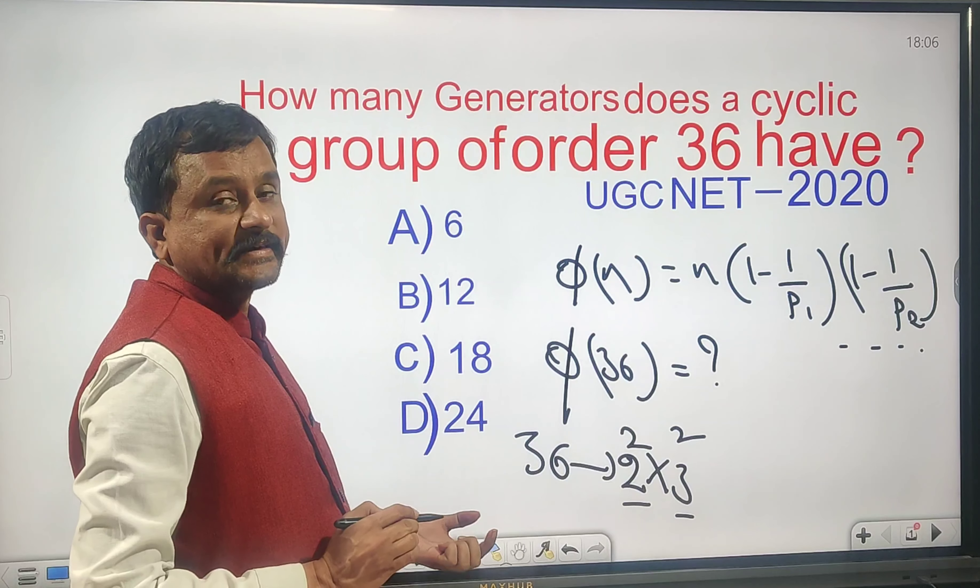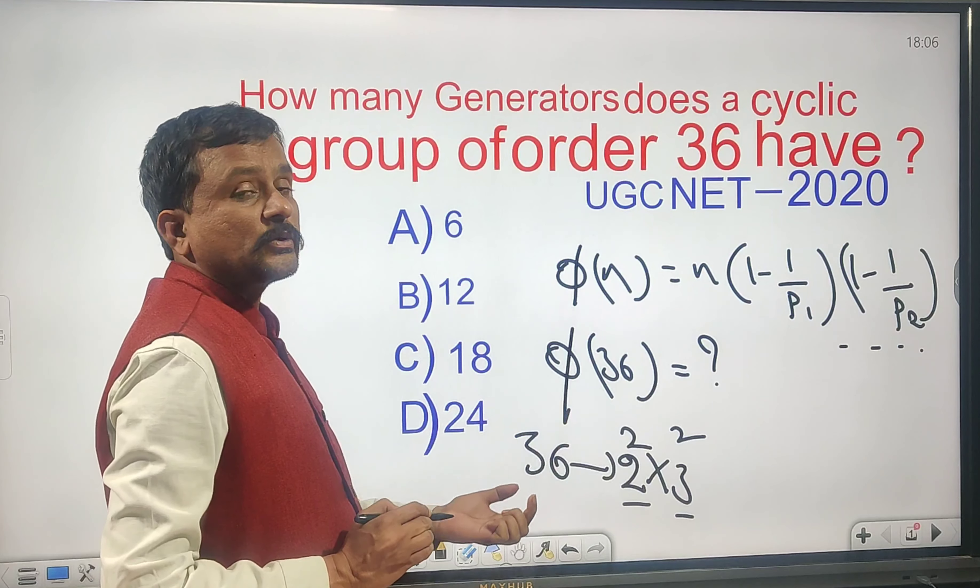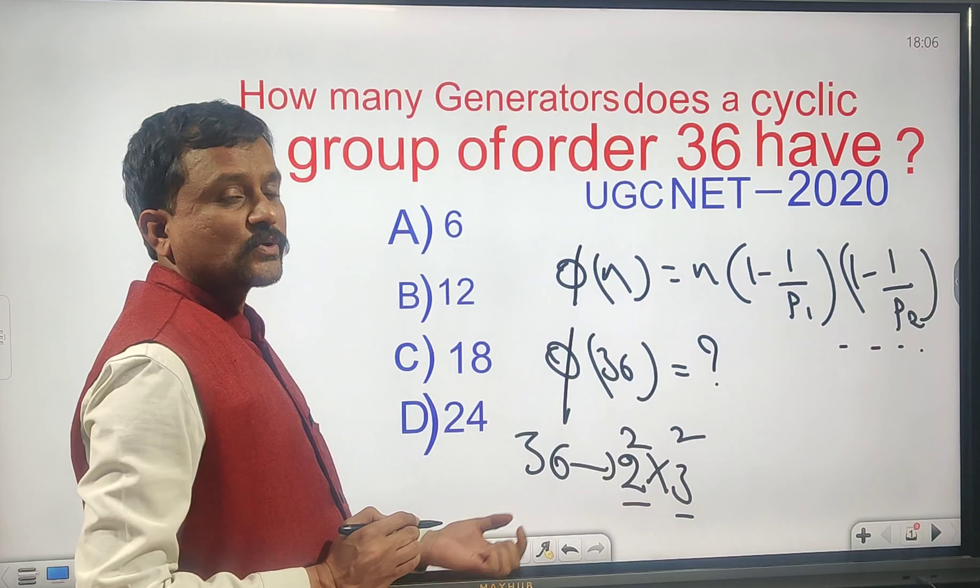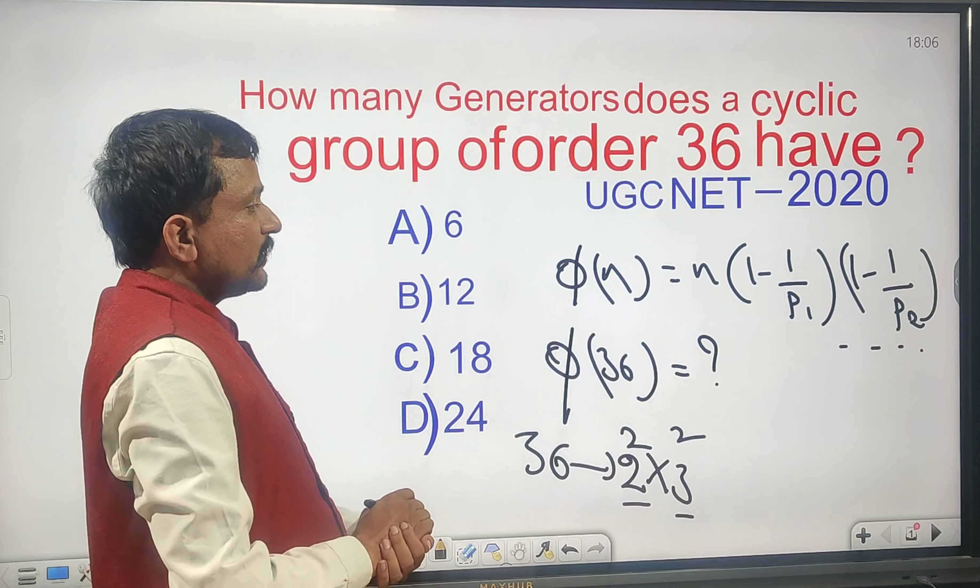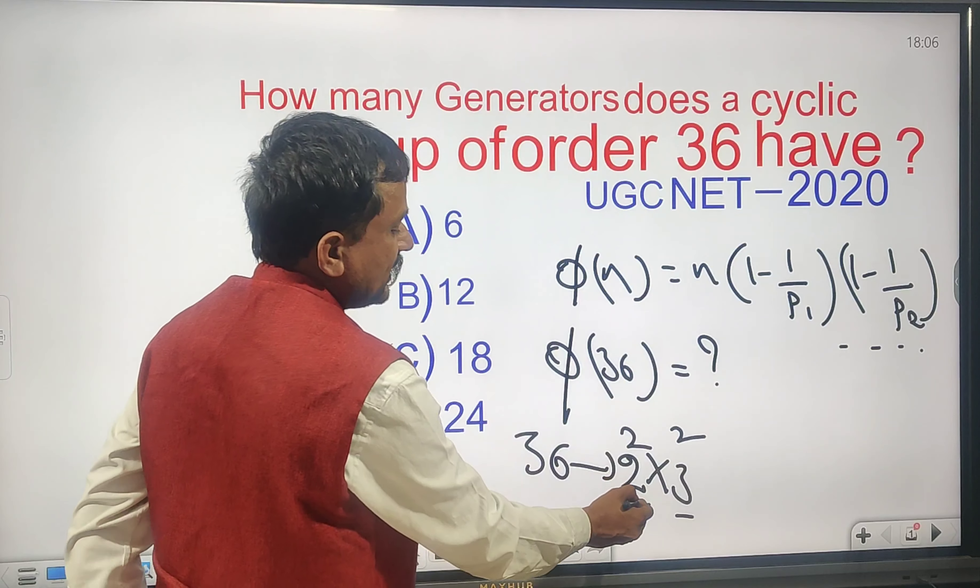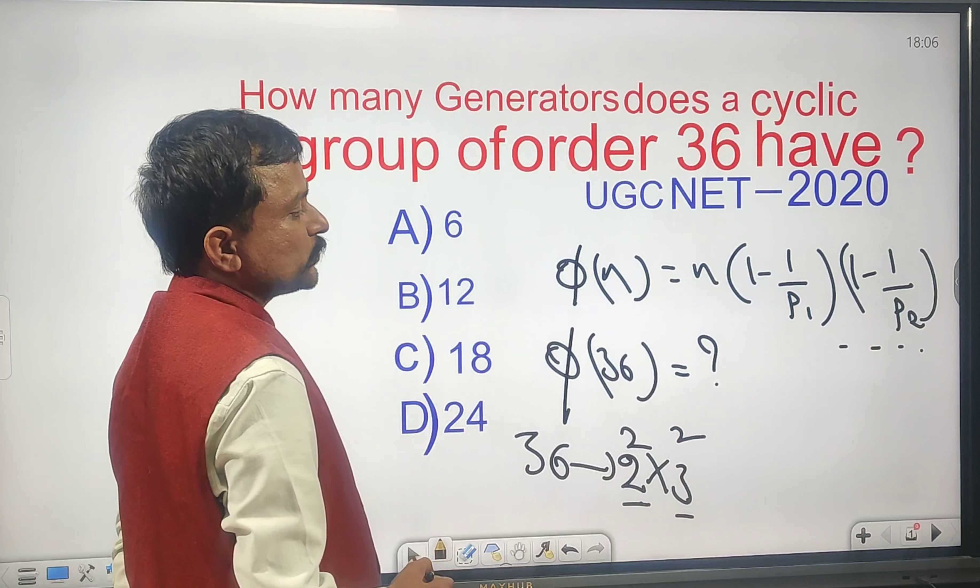The factors of 36: 2 squared gives 4, 3 squared gives 9. 2 squared times 3 squared. So p₁ is 2 and p₂ is 3.